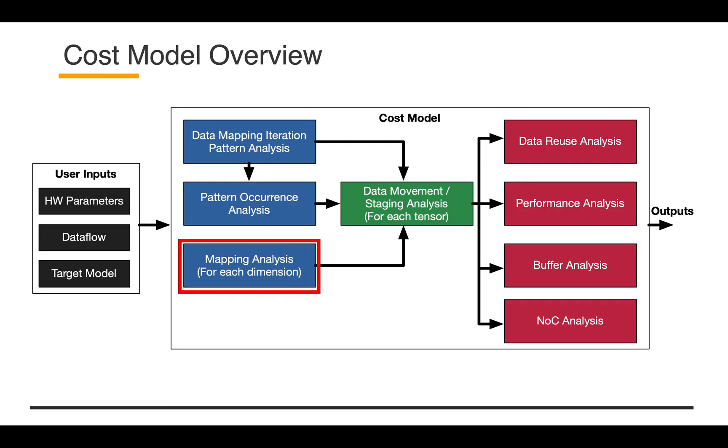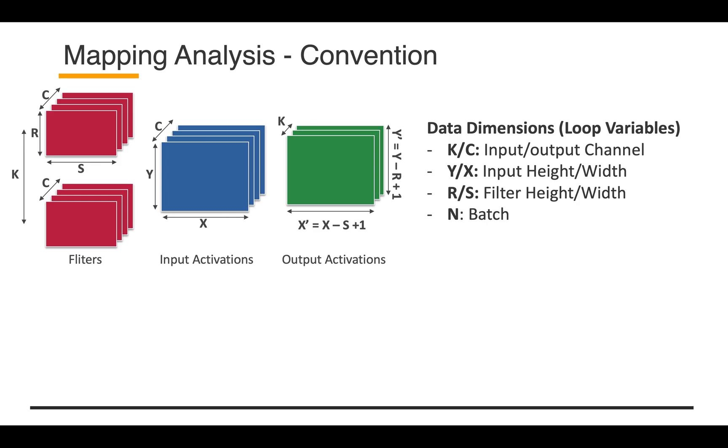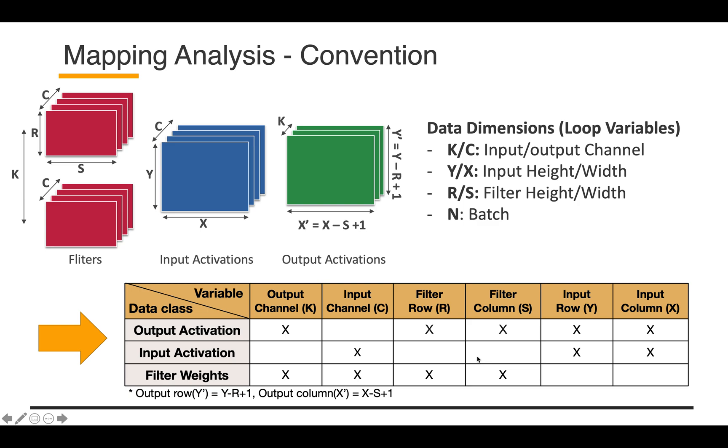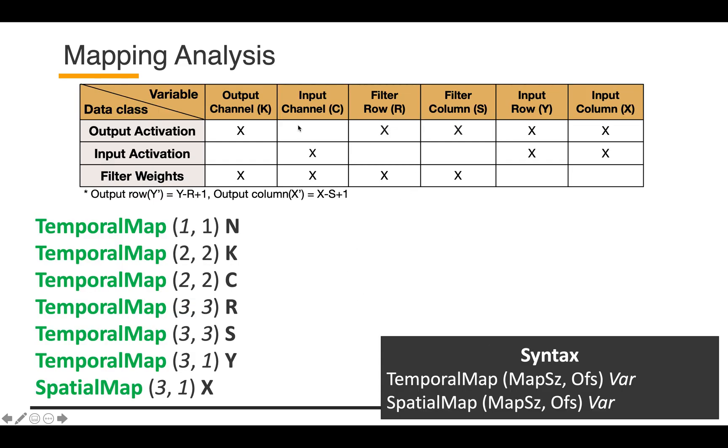The last one is mapping analysis. For mapping analysis, this is just a reminder about the convention. For CONV2D operation, I will use this convention: K and C are input and output channel, Y and X are input height and width, R and S represent filter height and width, and N represents batch. They are coupled with each tensor. For example, the filter weight tensor is coupled with the output channel, input channel, filter row and filter column.